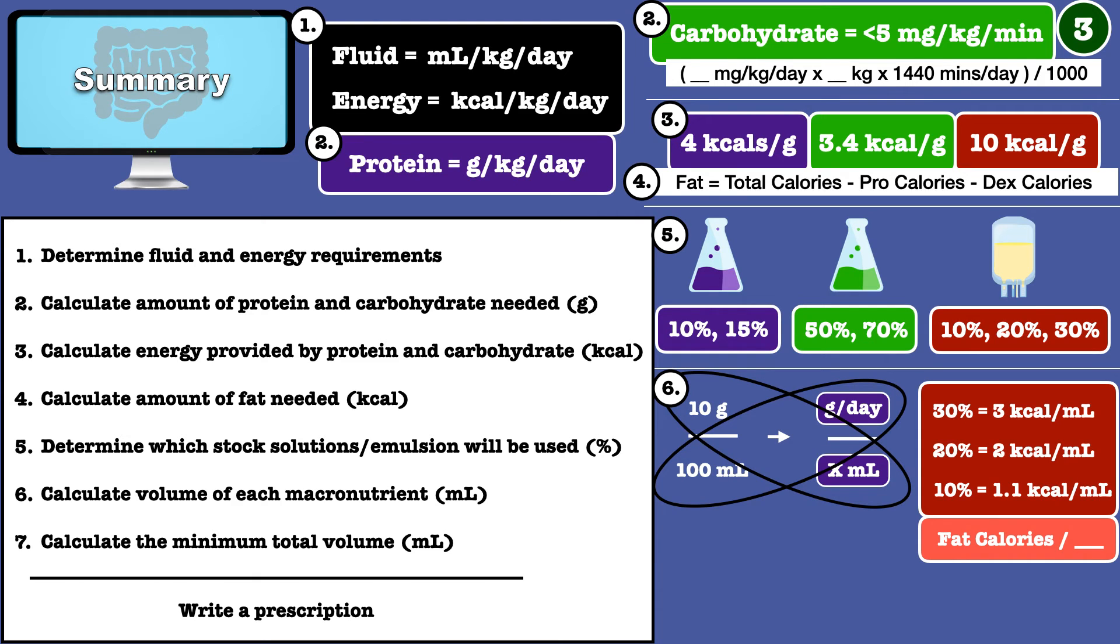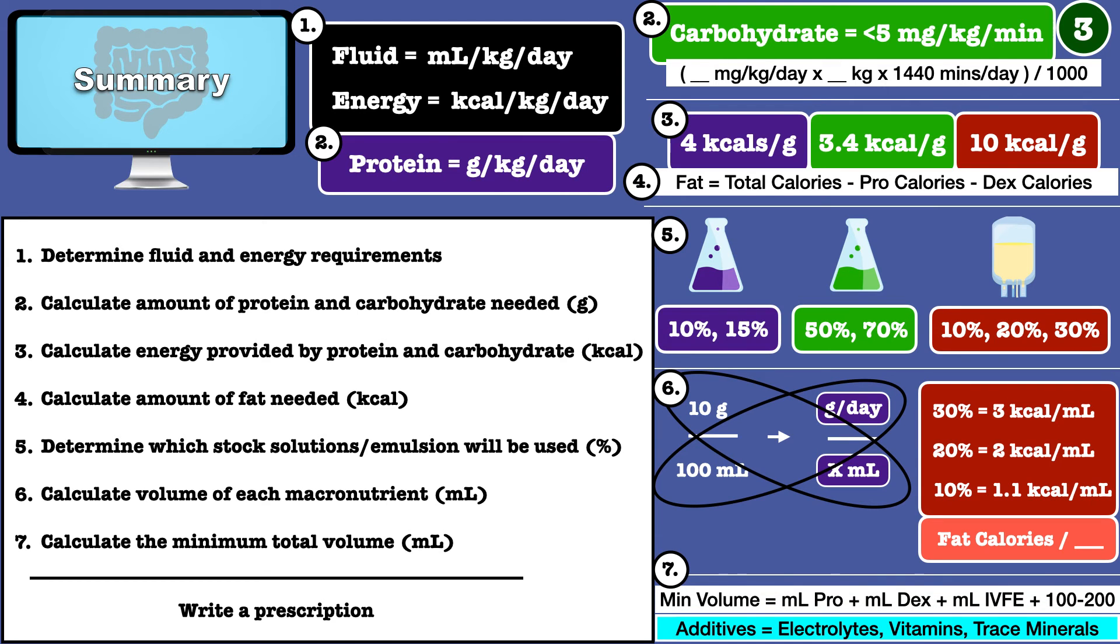Coming to an end, you calculate the minimum total volume, which is the lowest volume you can use to fit the ingredients. It must always take into account the 100 to 200 milliliters provided by additives like electrolytes, vitamins, and trace minerals.